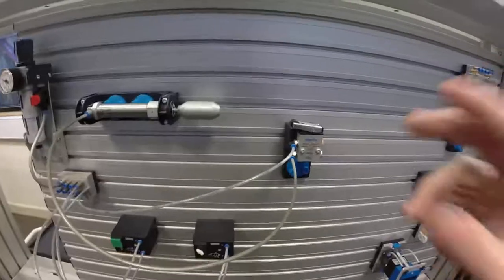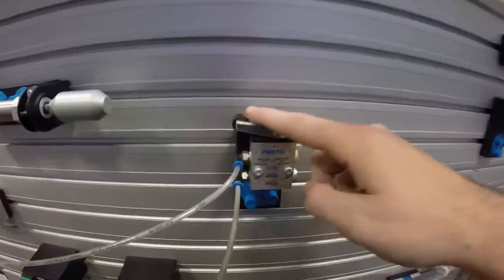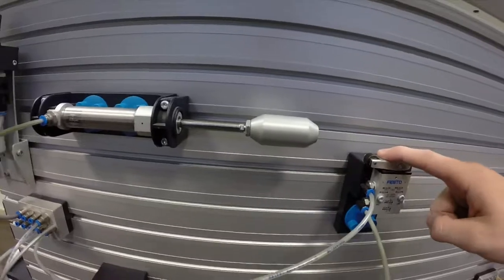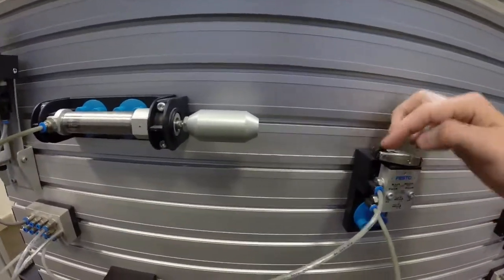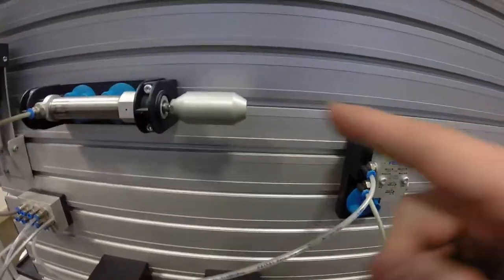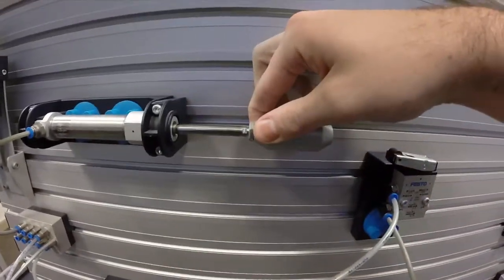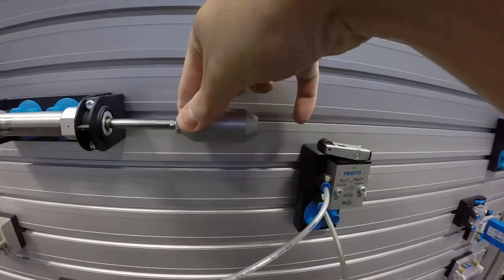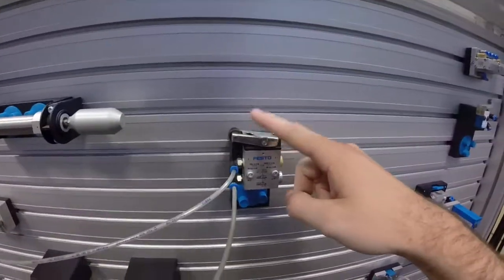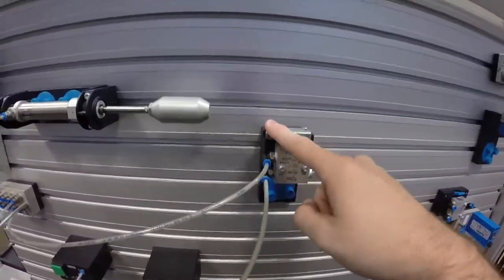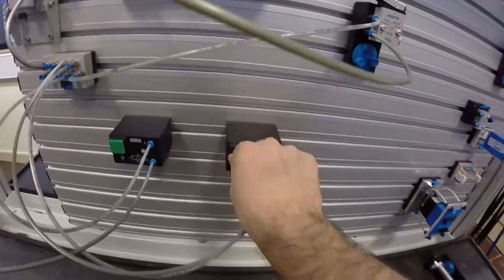You'll see when this gets operated, the single acting cylinder comes out, we release it, it returns. We can use these to sense positions on the roller switch. If I pull that out, it could hit that roller switch if I moved it in, and we could use that to operate something else. This is more mechanically operated, whereas the previous ones are manually operated.